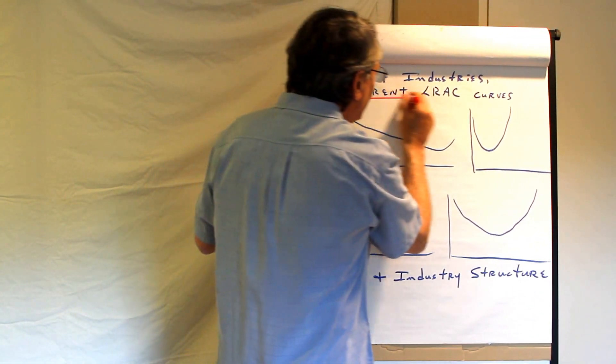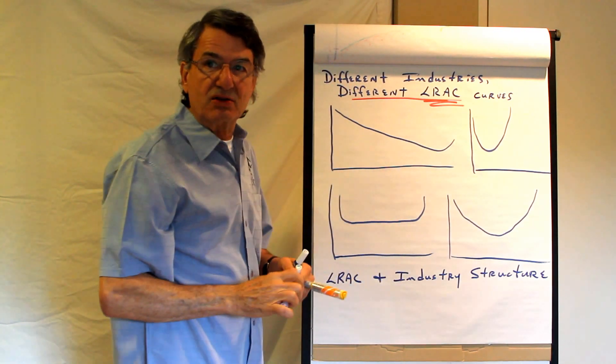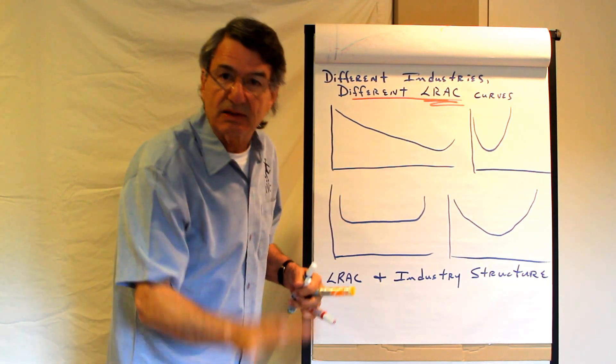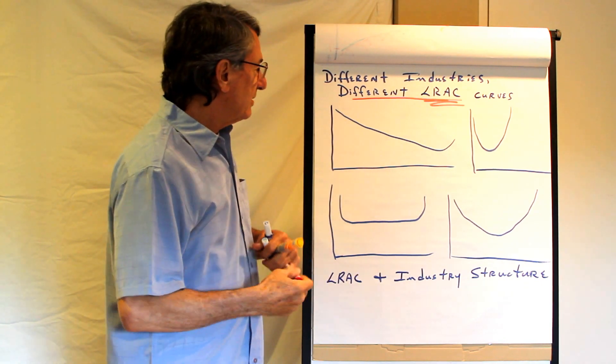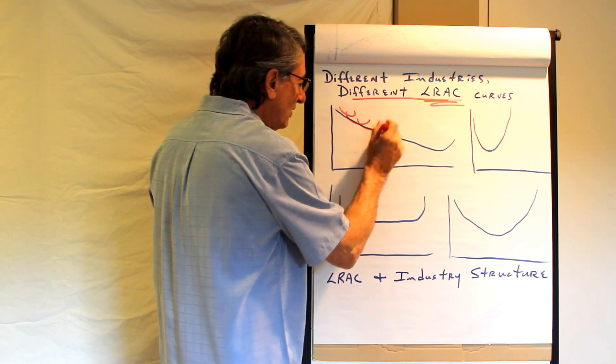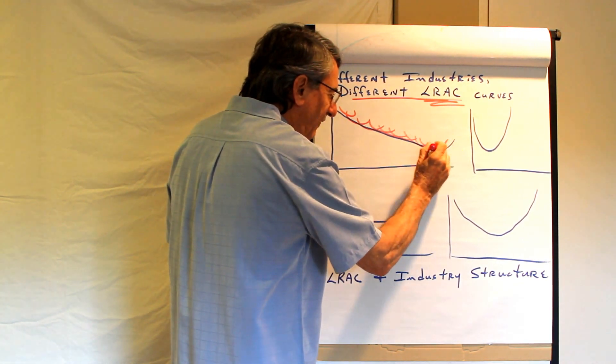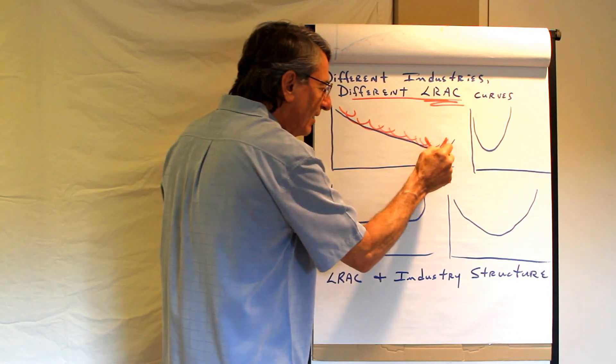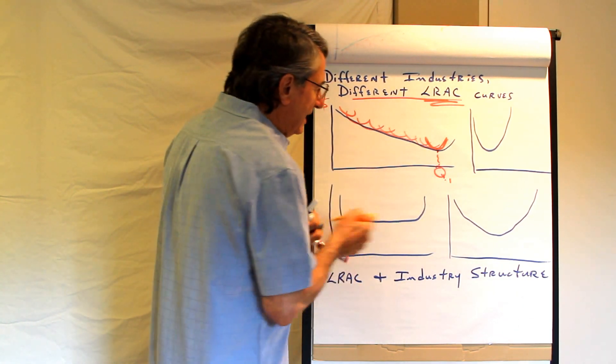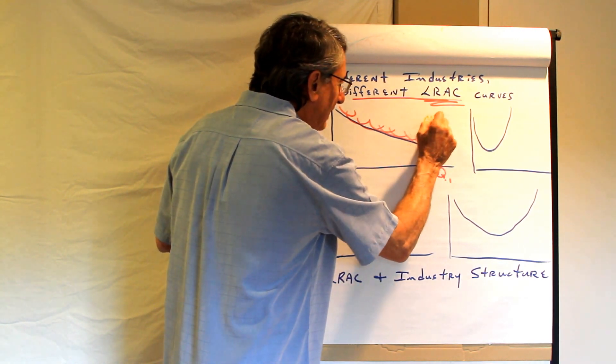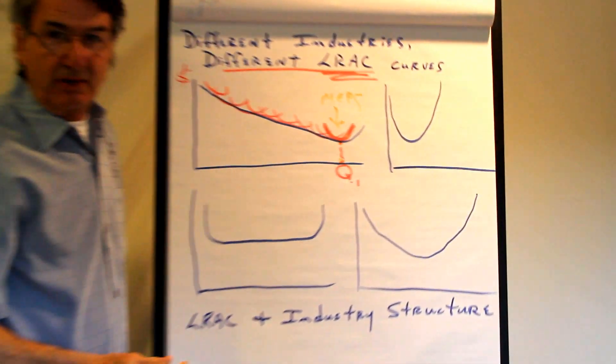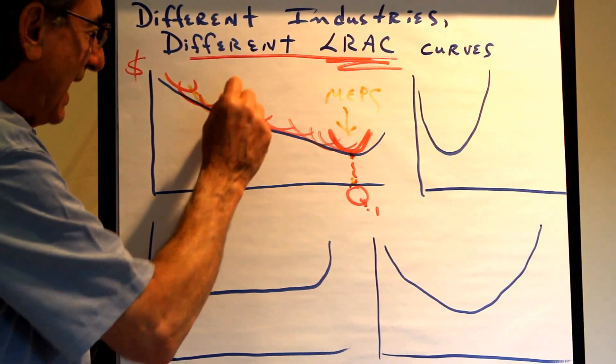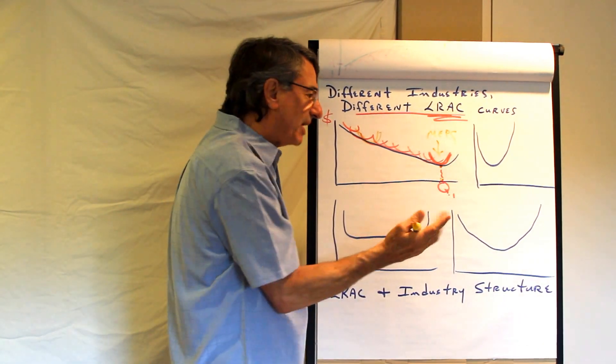And finally, different industries have different long run average cost curves because the technology is different in all industries. Industries are classified as groups of firms producing similar products. But some industries, the technology is such that there's this extended range of economies of scale. And to be efficient in this industry you've got to produce this quantity. Now this is an enormous quantity. This is a very large plant. This is large scale production. And since this is the minimum efficient plant scale, then you have to be big in order to be efficient. So in this industry you're going to see a few large firms competing because small firms cannot compete, their costs are too high. So this would be maybe like a monopoly or an oligopoly.